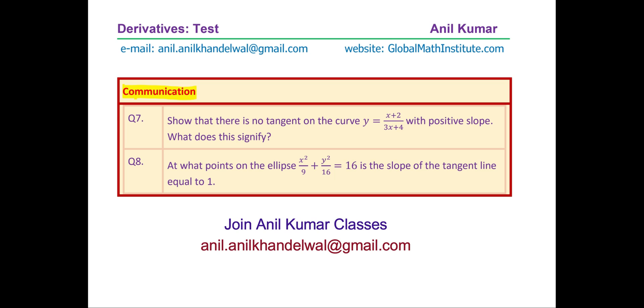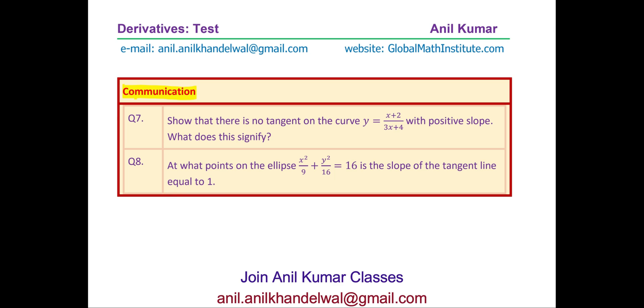Question number eight. At what points on the ellipse x square over 9 plus y square over 16 equals 16 is the slope of the tangent line equal to 1. You don't have to find the equation of tangent line. You just need to find the points on the ellipse.